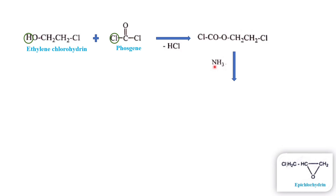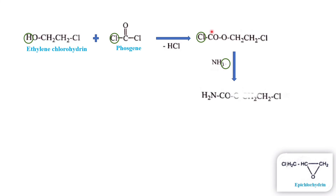With the intermediate we add ammonia — this is the amination step. The Cl on the intermediate combines with an H from ammonia and is removed as HCl. The remaining NH2 is added to the intermediate, giving a second intermediate.